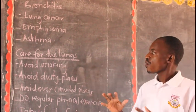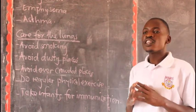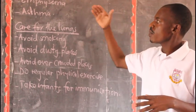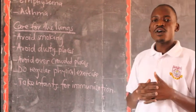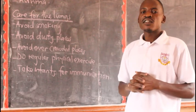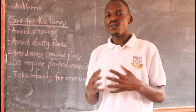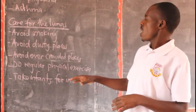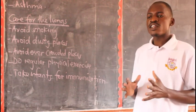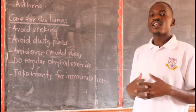Friends, let's look at how best you can care for your lungs. One is by avoiding smoking — we have seen that smoking brings about bronchitis and emphysema, so you are supposed to avoid smoking and your lungs will work properly. Then, avoid dusty places, as dusty places increase the effect of flu or influenza. Also avoid overcrowded places — a place which has very many people and little space — because when you are in an overcrowded place, you will begin to suffocate.